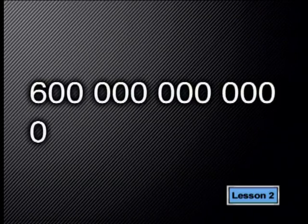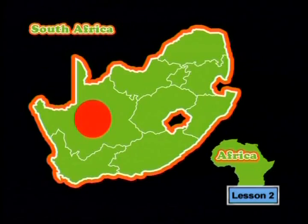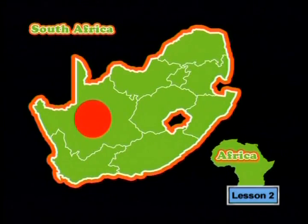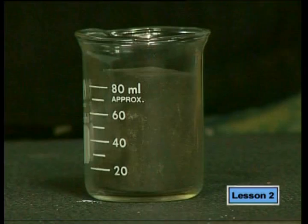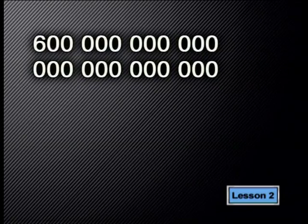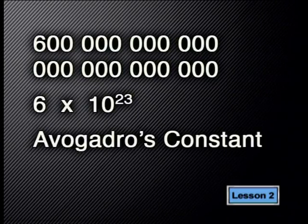The number of atoms in 12 grams of carbon is about 600,000 million billion atoms. Imagine a surface area a little bit bigger than the Northern Cape covered with grains of sand up to the height of a 10-story building — this would be about one mole of sand. Yet that's the number of atoms squashed into a 12-gram sample of carbon. This huge number can be written in scientific notation as 6 × 10²³ and is called Avogadro's constant.